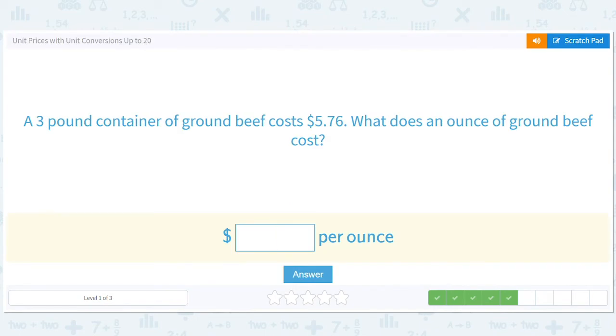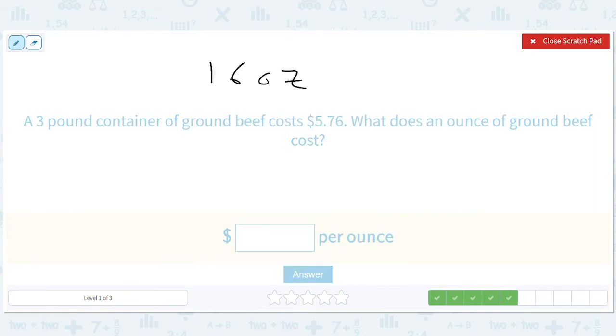Now we're doing pounds. There are 16 ounces in a pound.